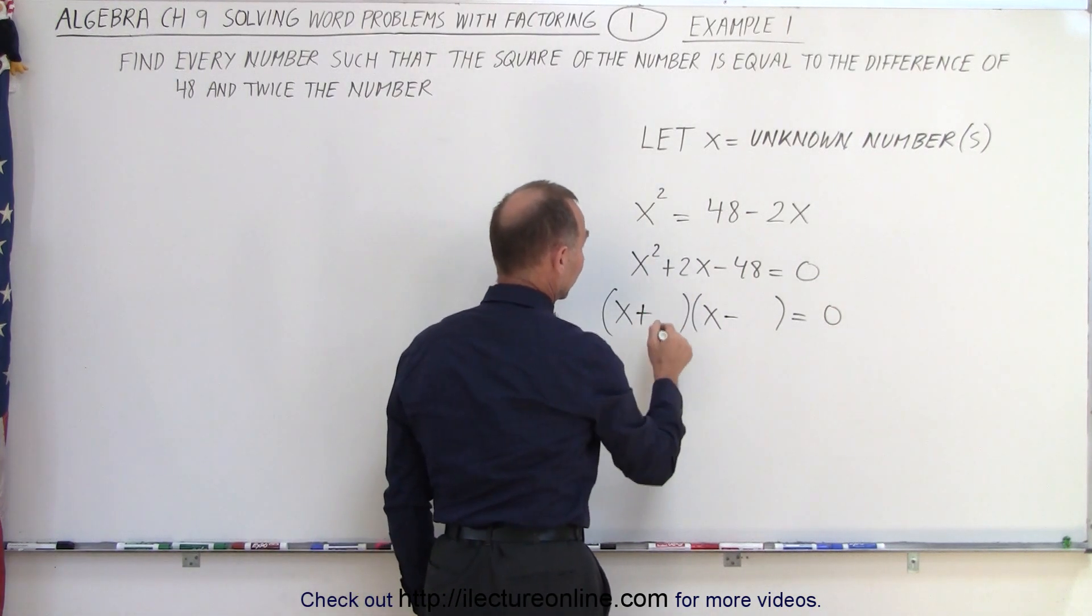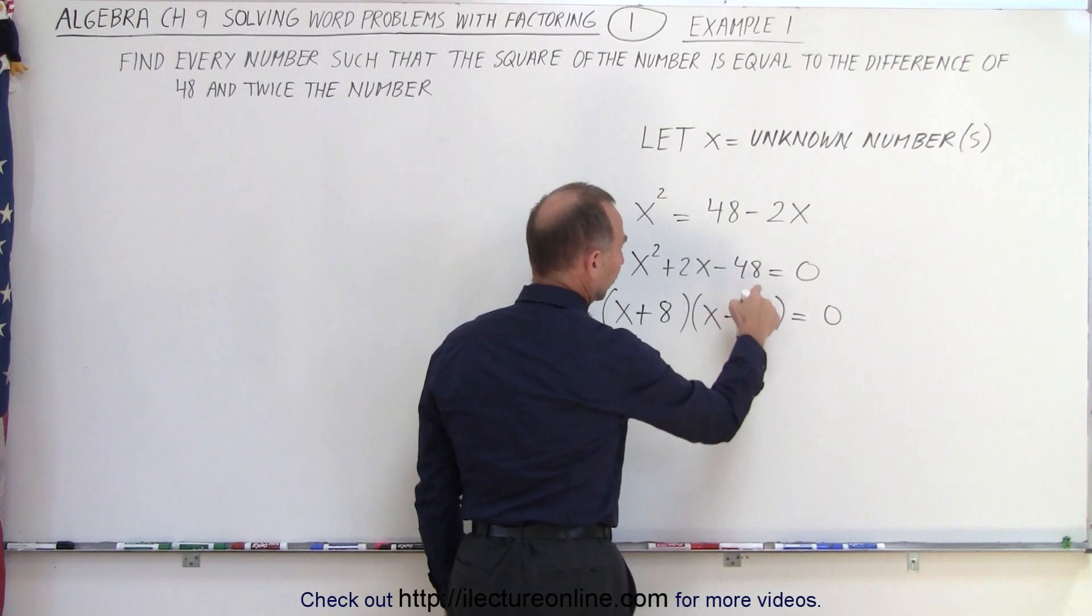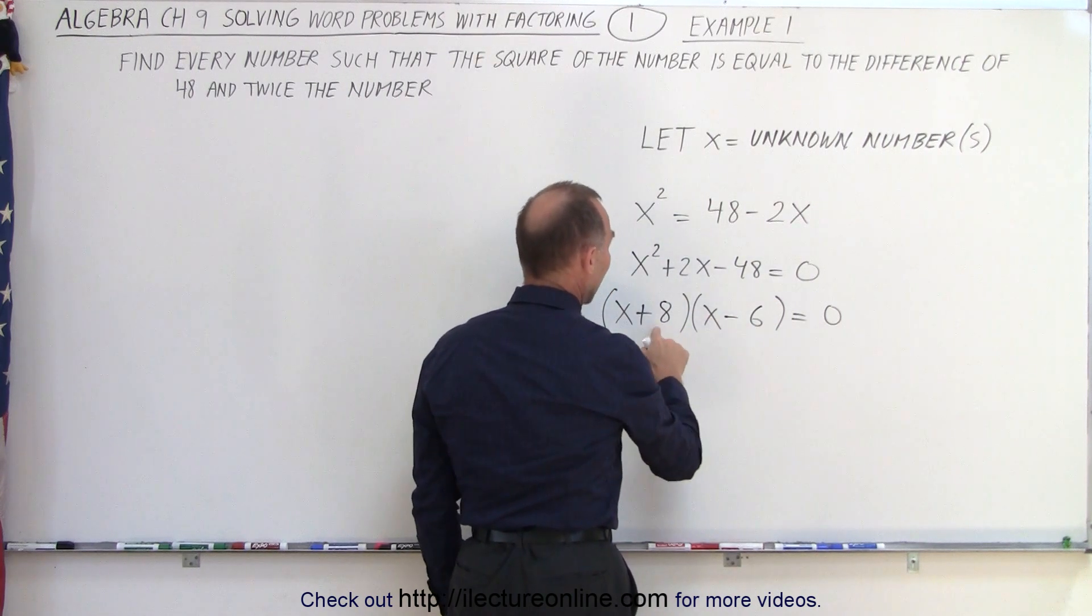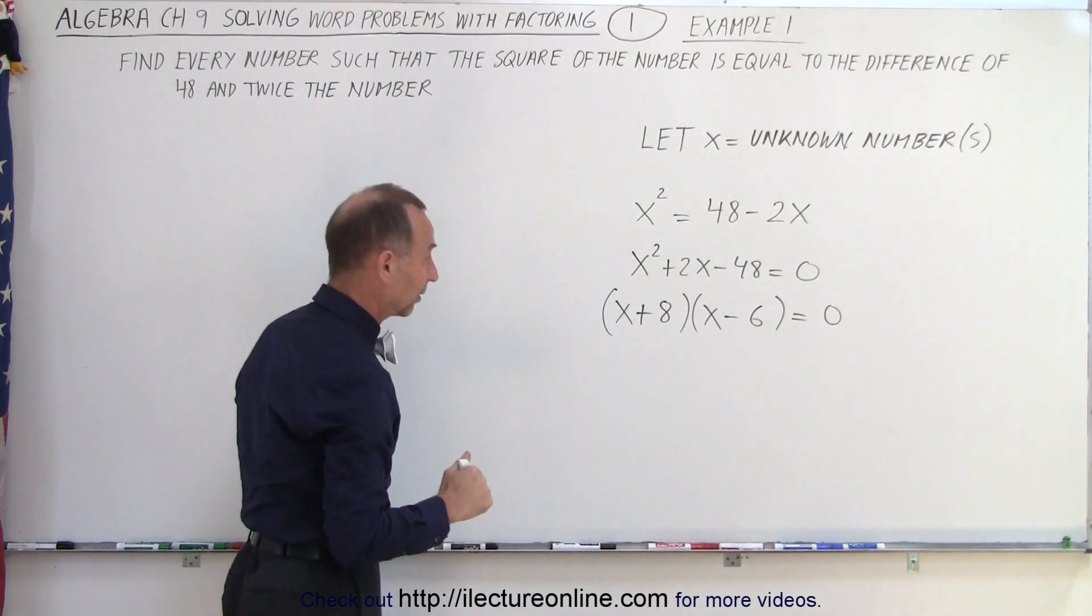The bigger one should be positive, so a positive 8 and a negative 6. 8 times 6 is 48, negative 48 because of the negative. And 8 plus negative 6 gives us plus 2. So that looks like the correct numbers.